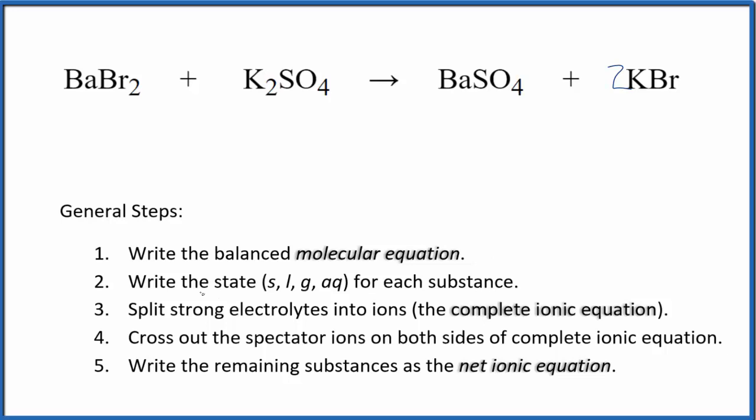Next, we need to write the state for each substance. If you know your solubility rules, these barium compounds here, they're soluble most of the time. And then if we have compounds with group one elements, they're usually soluble, like potassium here. And sulfates in general, they're soluble. So this is going to be aqueous, dissolve, dissociate into its ions.